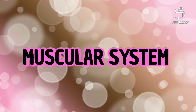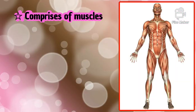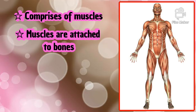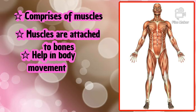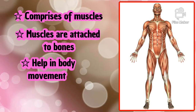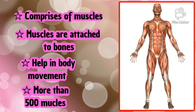The next organ system is the muscular system. The muscular system comprises muscles. Muscles are attached to the bones and help in body movement — that means they help our body to move. There are more than 500 muscles in our body.